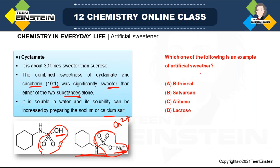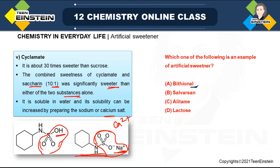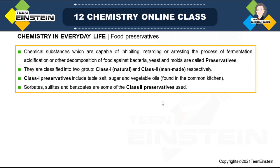Question: Which one of the following is an example of artificial sweetener? The four options are bithional, salvarsan, alitame, and lactose. Lactose is a carbohydrate. Bithional and salvarsan are antiseptic/antibiotic drugs. The artificial sweetener is alitame.